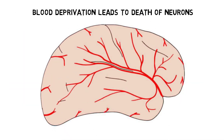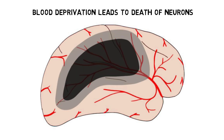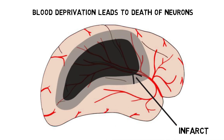In either case, when neurons are deprived of the oxygen and glucose found in blood, mechanisms that are dependent upon energy begin to fail. This can result in a series of biochemical reactions that cause the death of neurons and an area of dead tissue called an infarct — the term that refers to tissue that has died due to a loss of blood supply.